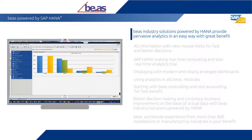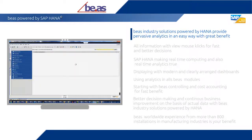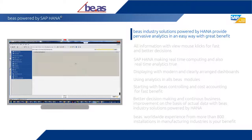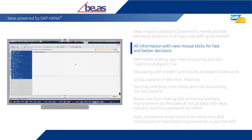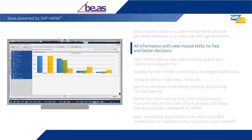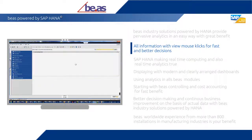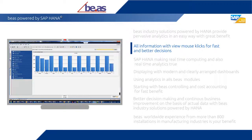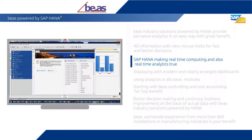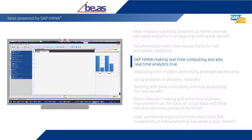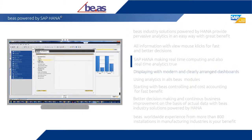With SAP Business One based BS industry solutions for discrete and process manufacturing powered by HANA, you can realize pervasive analytics in an easy way with great benefits. With few mouse clicks you get all the information and facts you need for better decisions daily. The innovative SAP HANA platform with its outstanding super-fast database makes this kind of real-time computing true, all displayed with modern dashboards.